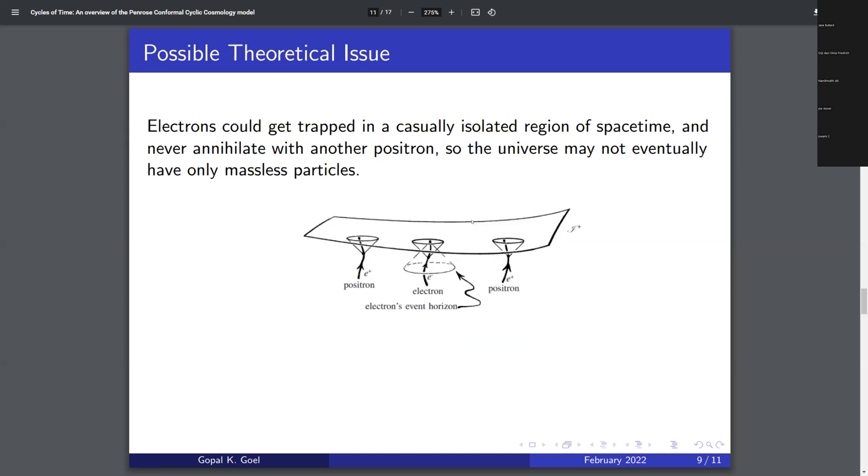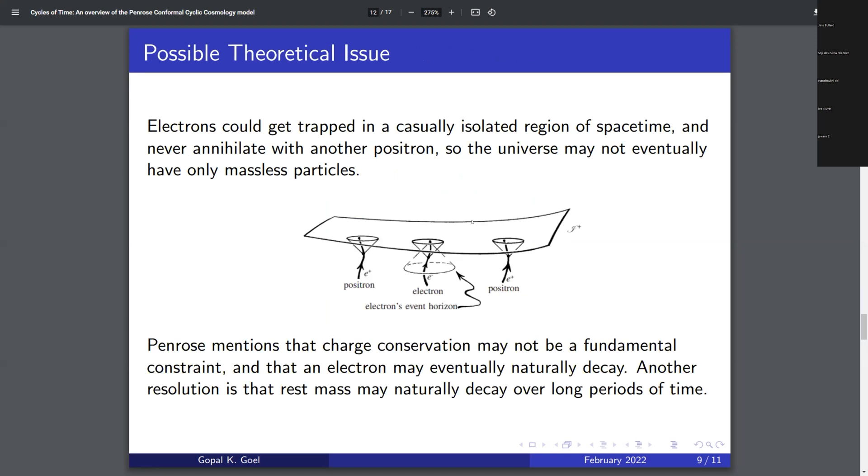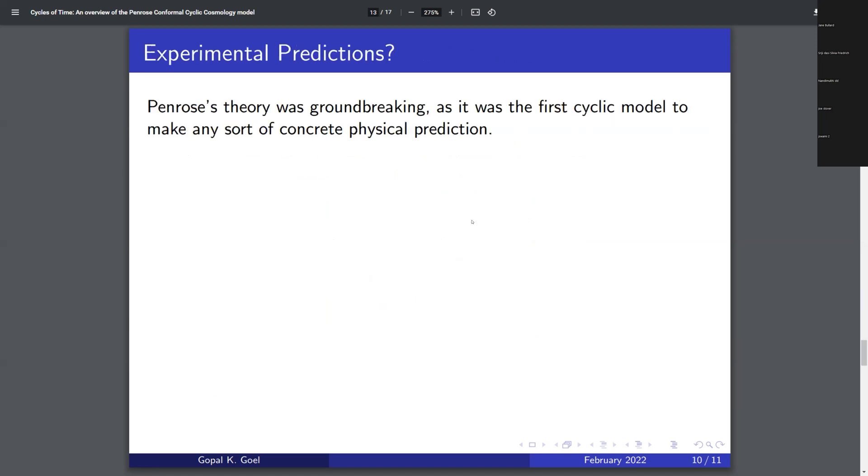So now there's a slide here which is some theoretical issues with this model but I'll skip that for now and we can come back to it later if there's more interest. But what I want to talk about is the reason why this model is really important to think about is that it's really the first cyclic model in mainstream cosmology that gave any chance at physical predictions. In the past all these cyclic models were thought about but wouldn't actually lead to any predictions.